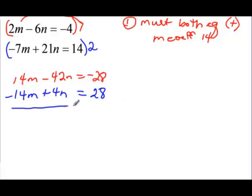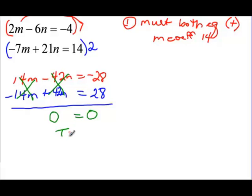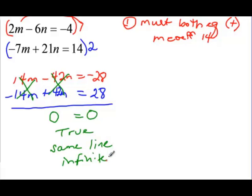Adding the two equations, positive 14m and negative 14m cancel each other out. And negative 42n and positive 42n also cancel out, so on this side I have 0. Then negative 28 plus 28 also gives me 0. So this is a true statement — 0 equals 0. If you remember from substitution, a true statement means that they are the same line, so you have infinite solutions.